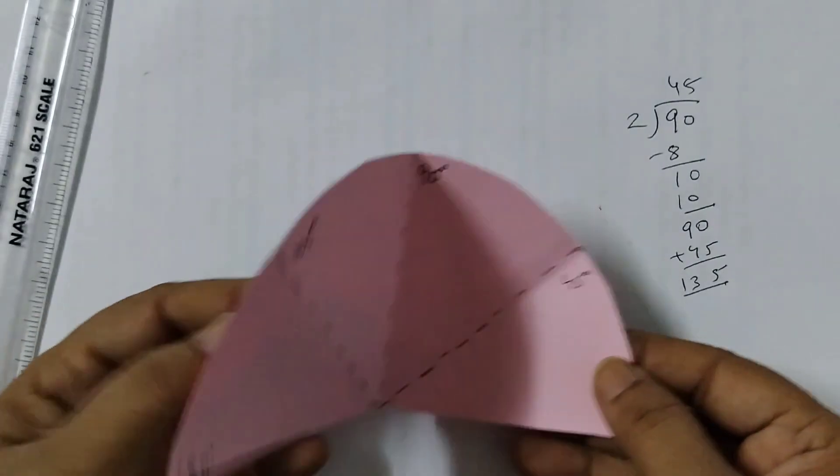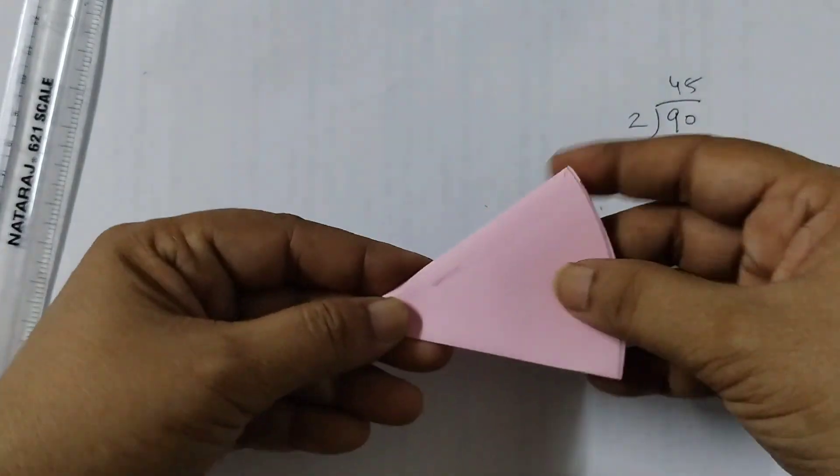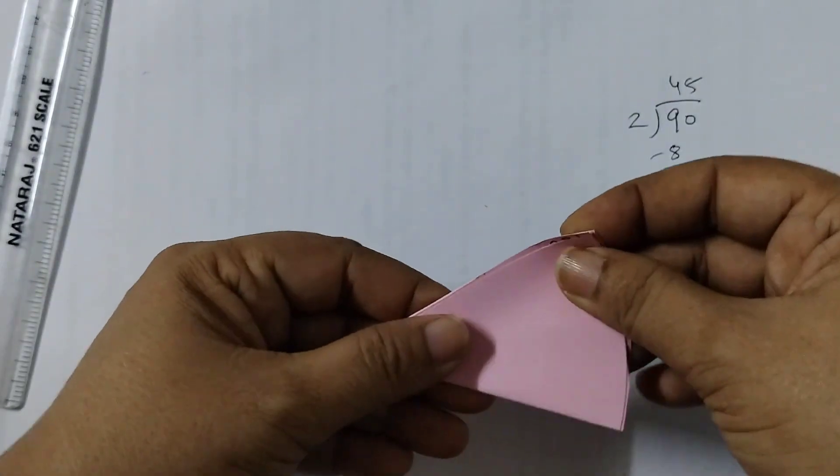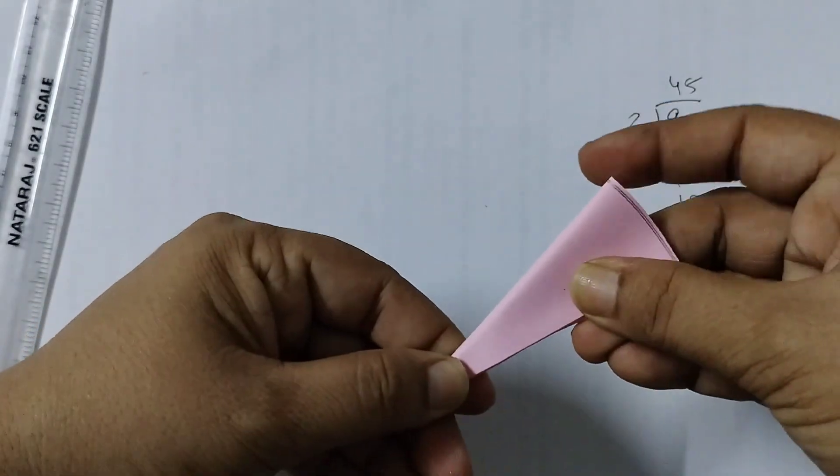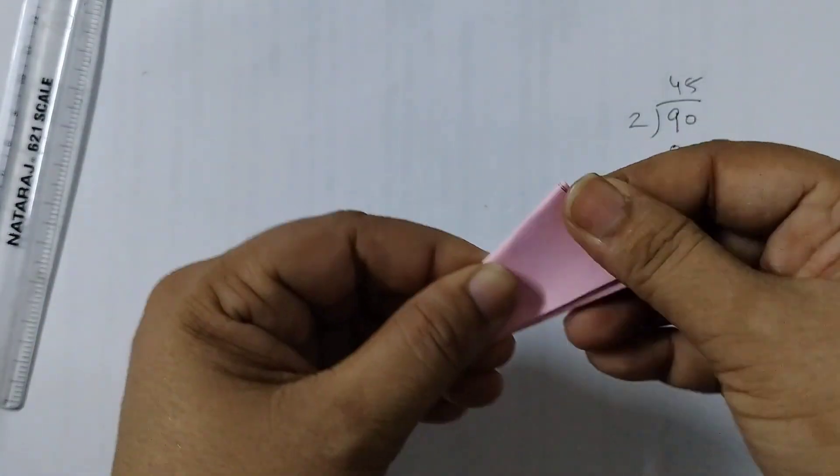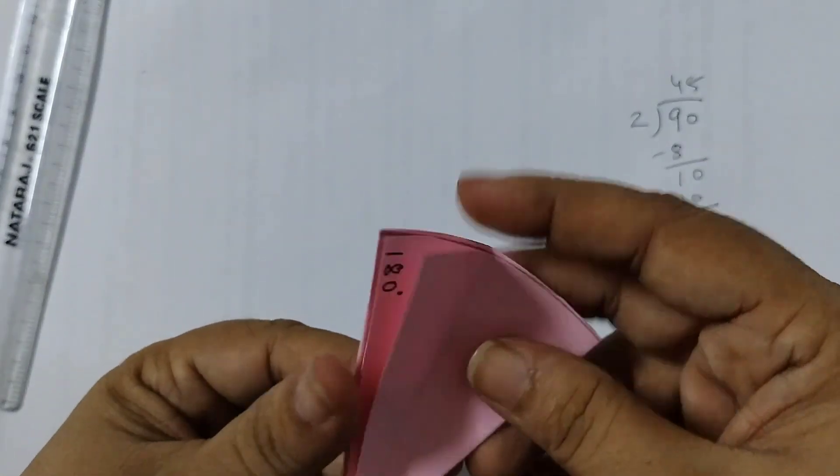Now step number five: again we are going to fold it. So first fold, second fold we completed till here. Now we have to fold it again. Open it up.